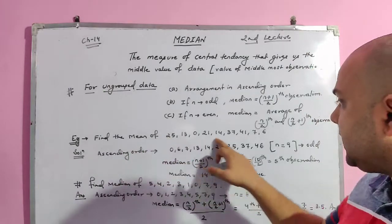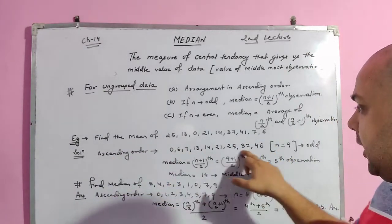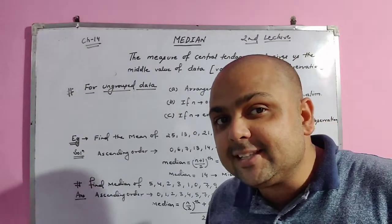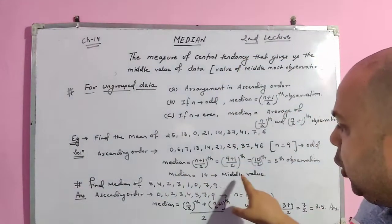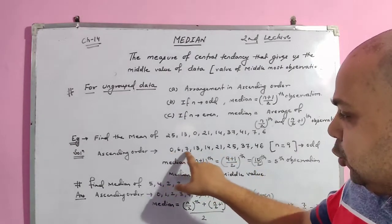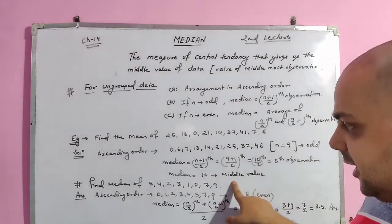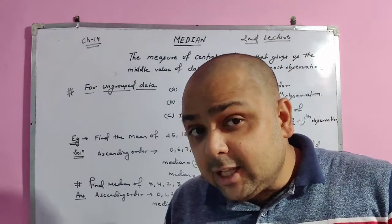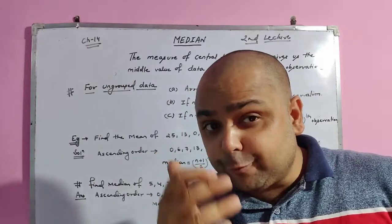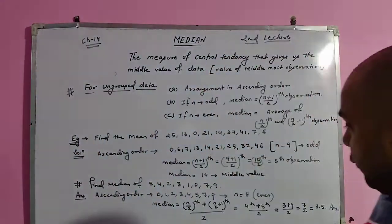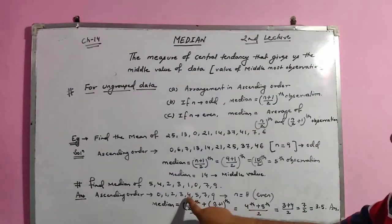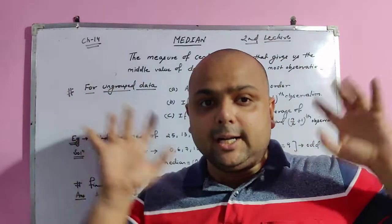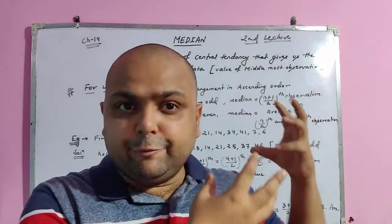In an example, we first arrange data in ascending order. Here n is 9, which is odd, so median is the (9+1)/2 = 5th observation. Counting the fifth element in ascending order gives us 40. In another case, n is 8 which is even, so median is (8/2 = 4th) plus (5th) divided by 2. The 4th term is 3 and the 5th term is 4, giving 7/2 = 3.5.